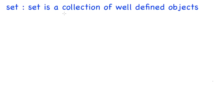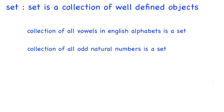A set is a collection of well-defined objects. I will try to explain these well-defined objects with examples. Consider the collection of vowels in the English alphabet.